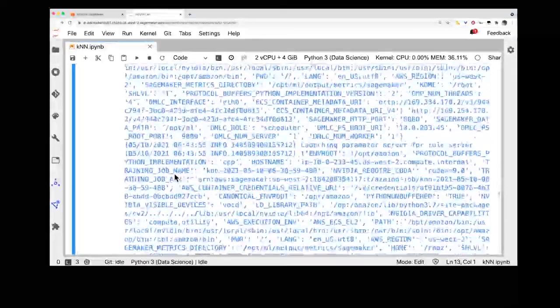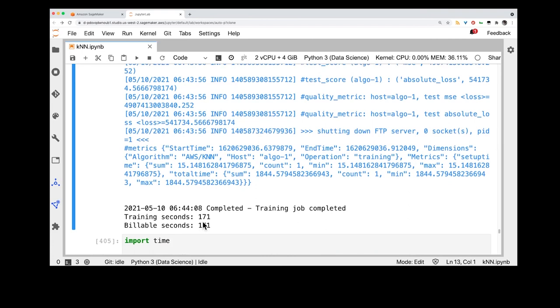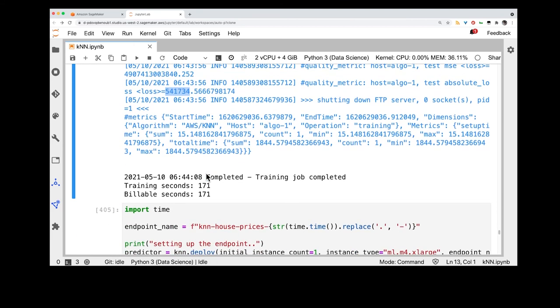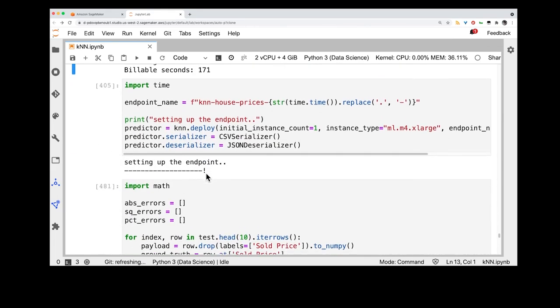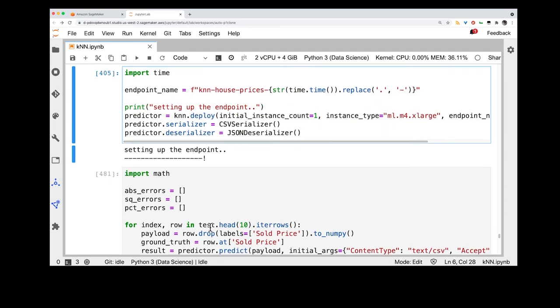Running the fit function is fast in this case, only 171 billable seconds, because we're not really doing much training in this case, just formatting the data and evaluating the loss against the test channel. The loss is shown as both mean square error and also the absolute loss. So, we see that in this initial attempt, we're off by about 500k in price on average. Keep in mind that this is California and prices go into several millions of dollars, so it's not bad.